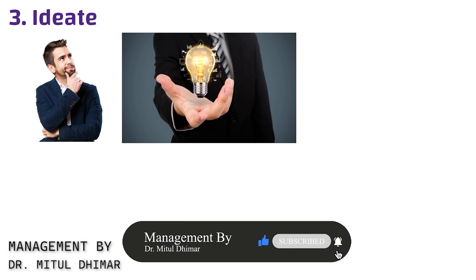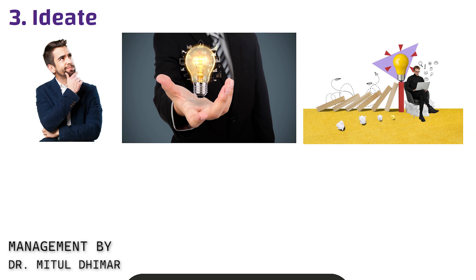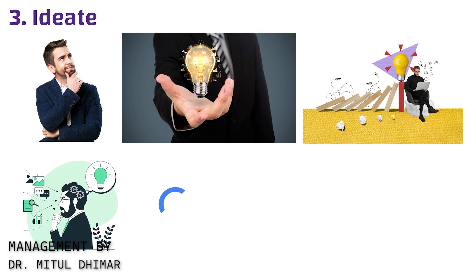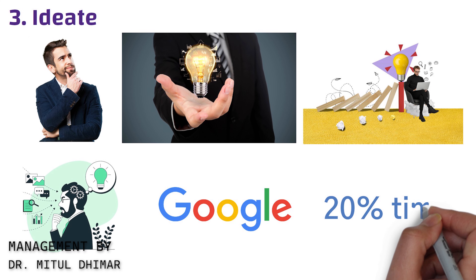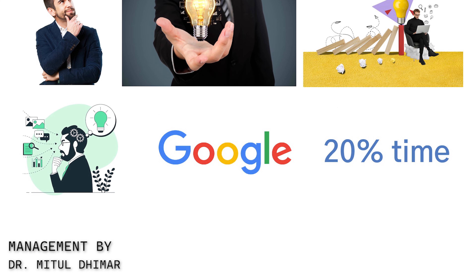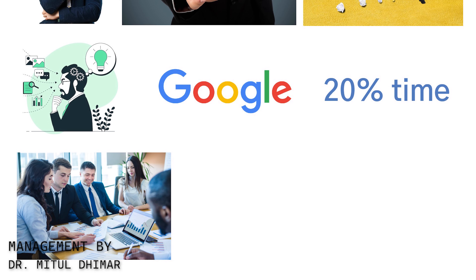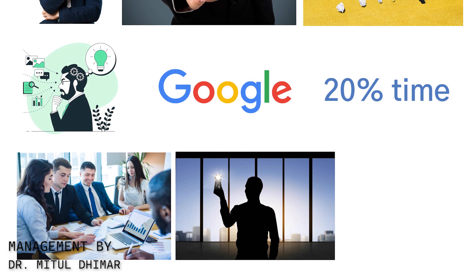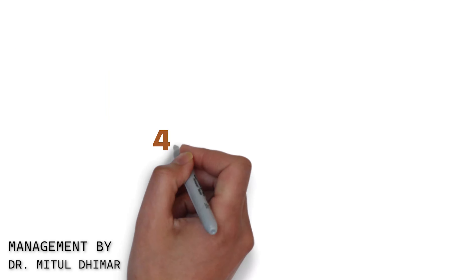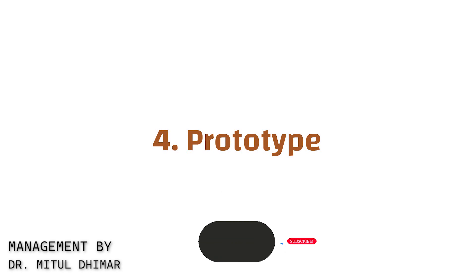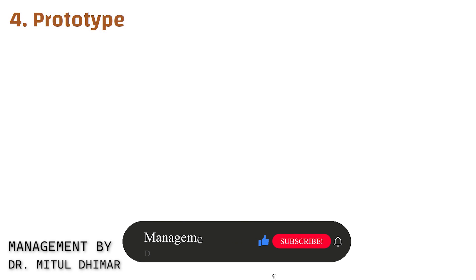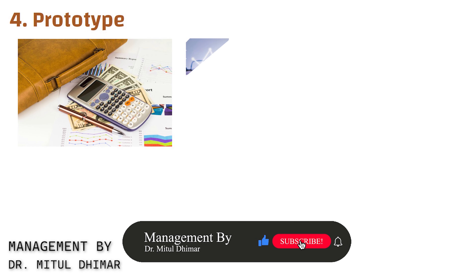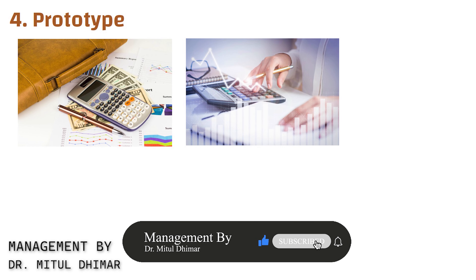Number three: Ideate. With a clear problem statement in mind, it's time to generate ideas. Ideation encourages creativity and divergent thinking. Google famously embraces this step through initiatives like 20% time, which allows employees to pursue passion projects. This led to innovations like Gmail and Google Maps.